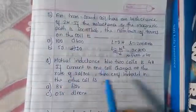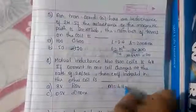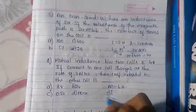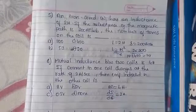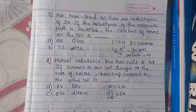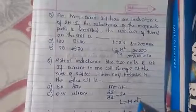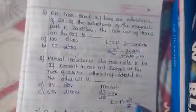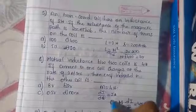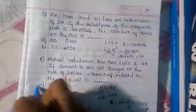Next question on mutual inductance: the mutual inductance between two coils is 4 Henry. If the current in one coil changes at the rate of 2 amps per second, find the EMF induced. Given M = 4H, di/dt = 2 A/s. EMF = M × di/dt = 4 × 2 = 8 volts.